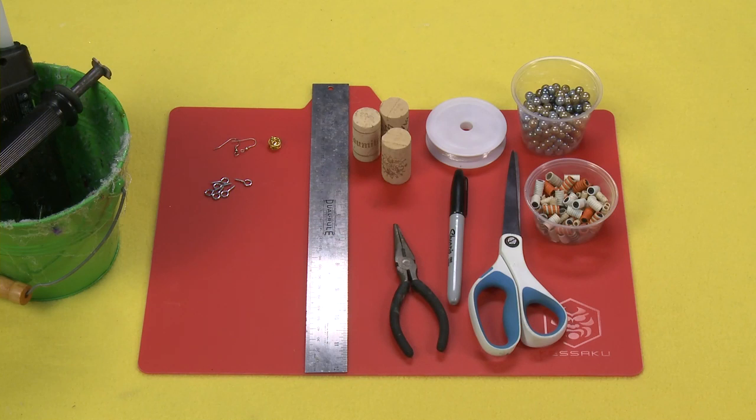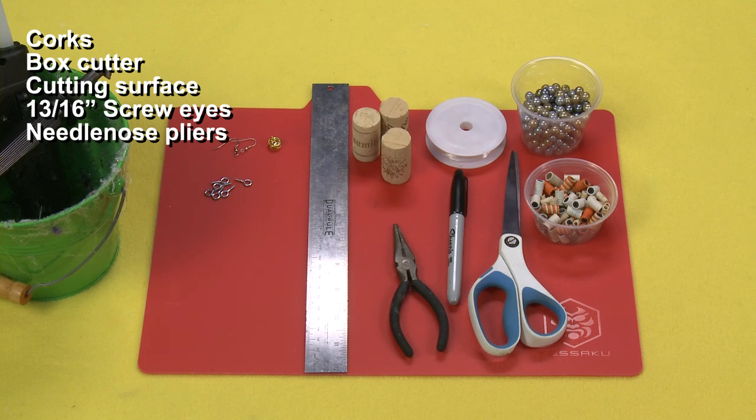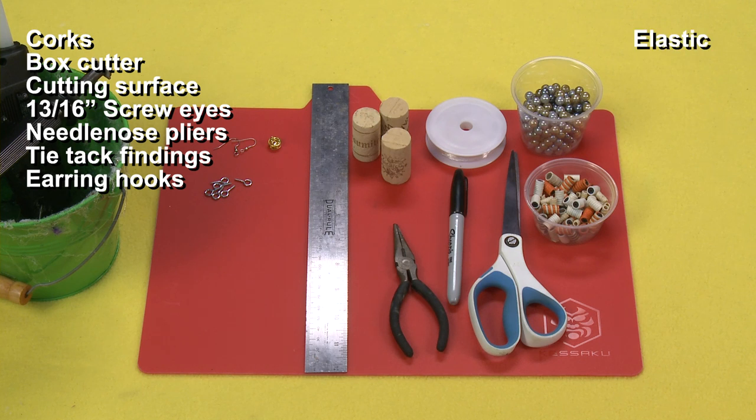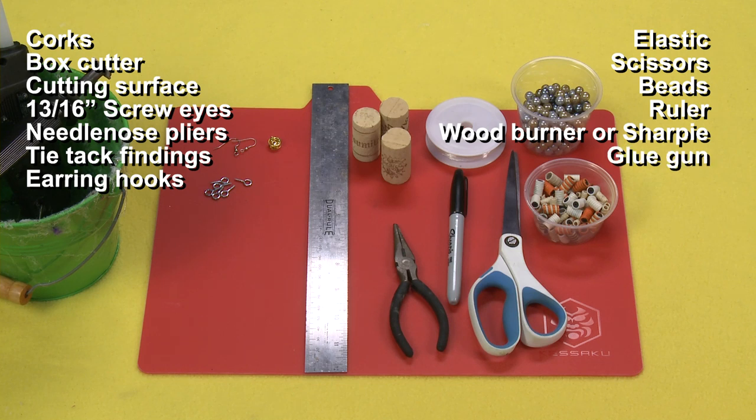For this project you will need corks, box cutter, cutting surface, 13/16 inch screw eyes, needle nose pliers, tie tack findings, earring hooks, elastic, scissors, beads, ruler, wood burner with alphabet stamps or Sharpie marker, and a glue gun.